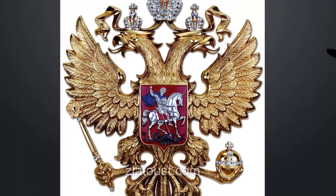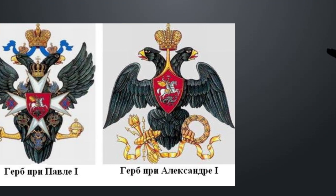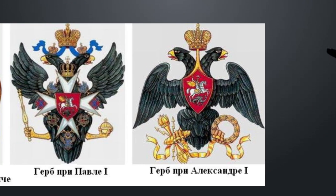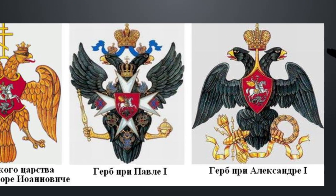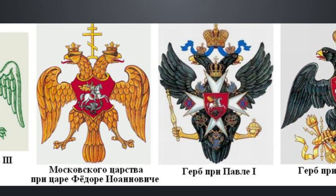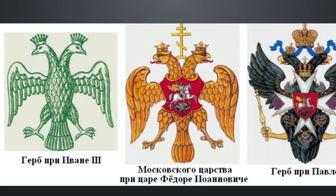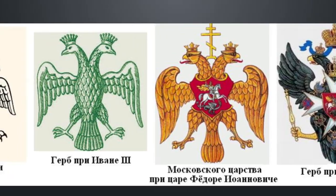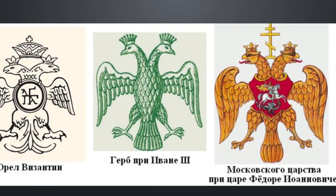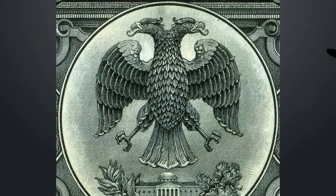However, the origins of this emblem trace back to the 4th century, when the double-headed eagle was the personal totem of the Roman Emperor Constantine the Great. After he moved the capital to Constantinople, the bird became the official emblem. The split of the Roman Empire into the western and eastern parts marks the Byzantine chapter in the history of the double-headed eagle.